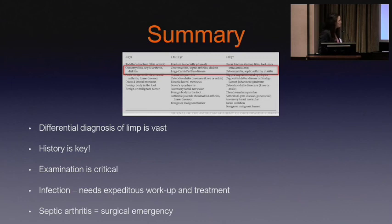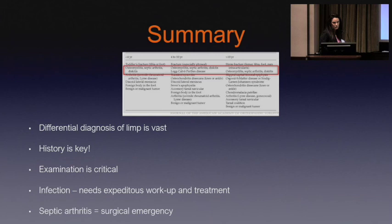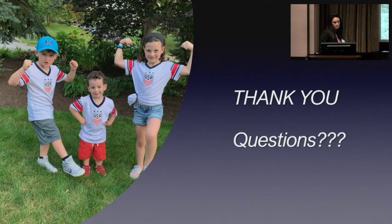In summary, the differential diagnosis of a limp is too many to count. Taking a good history and doing a good clinical examination are the key things. If you're concerned about infection, it needs a quick workup and quick decisions — because if you do find a septic arthritis, it really is a surgical emergency.